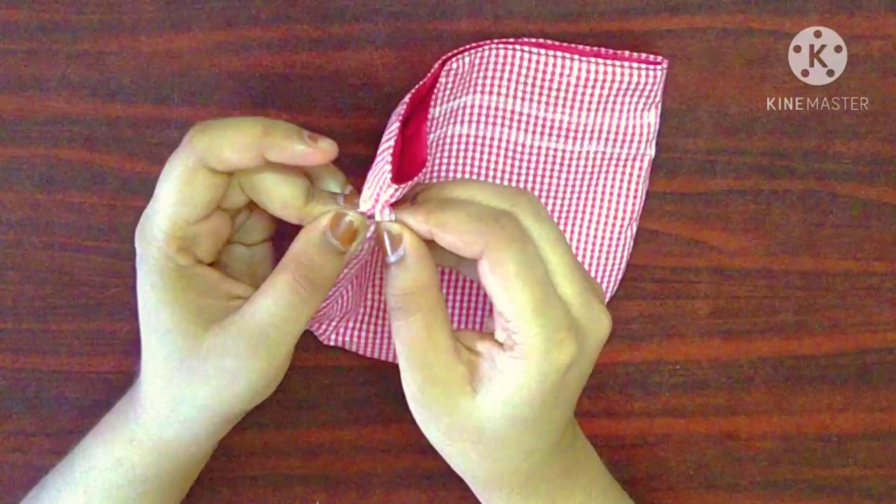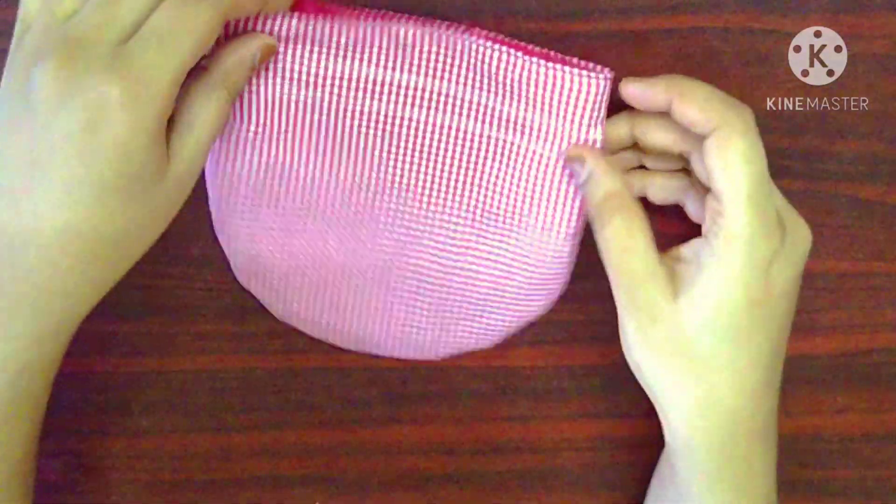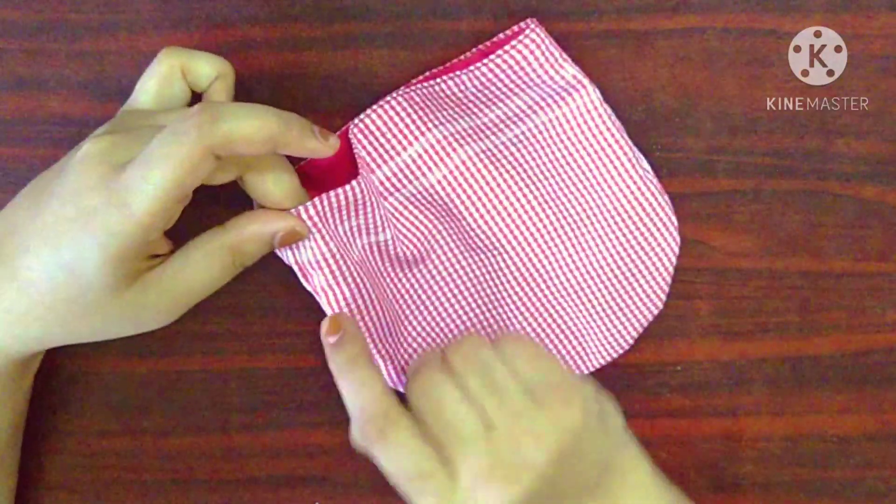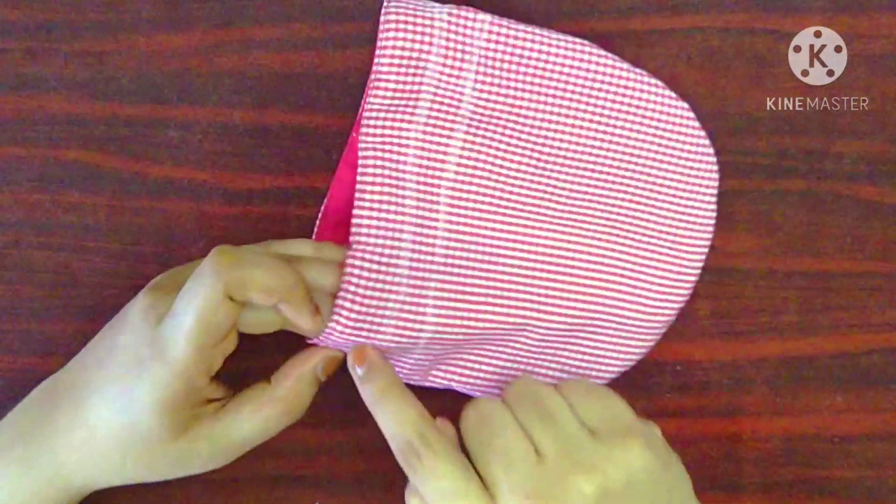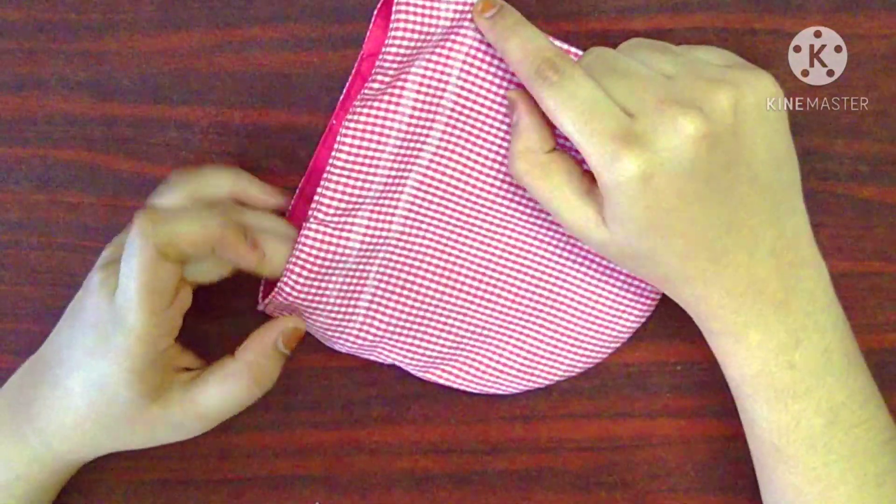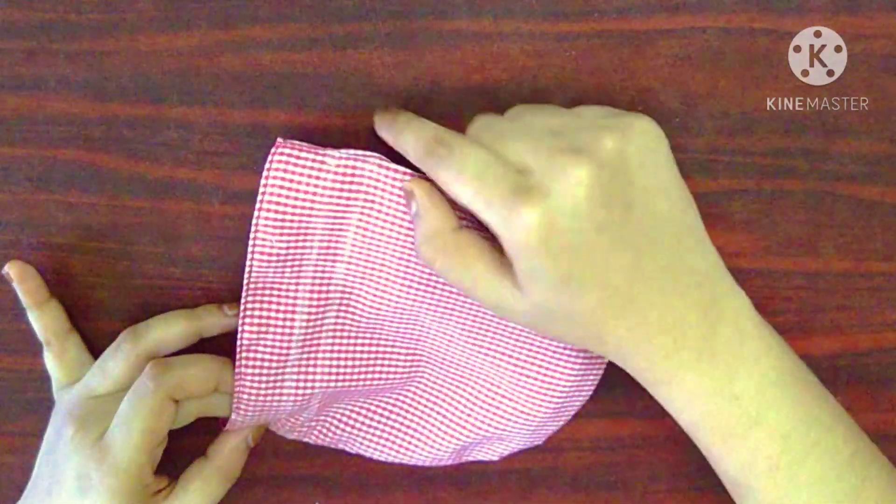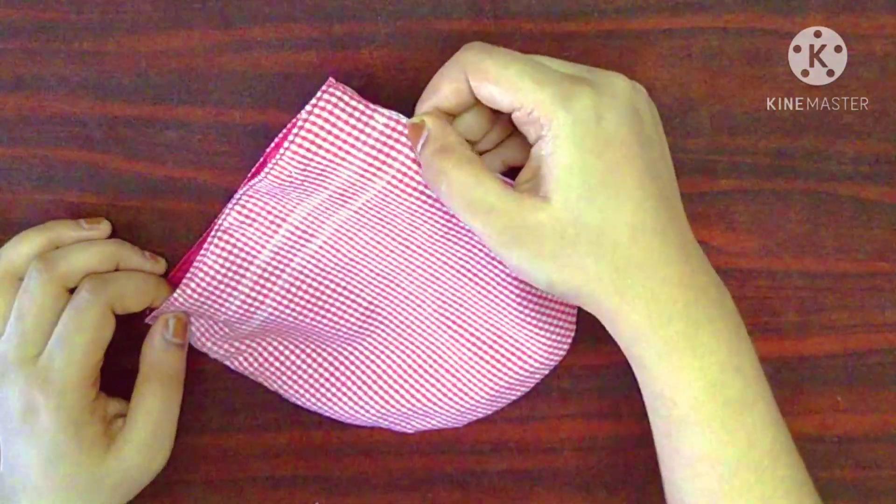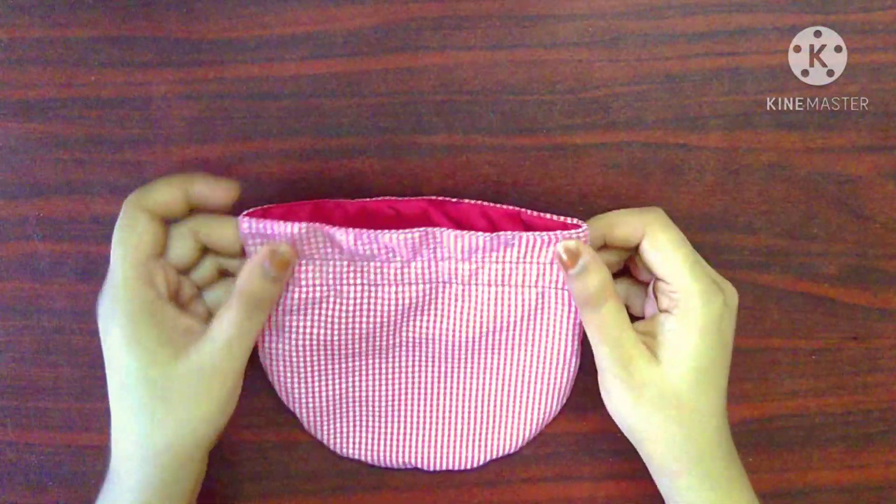These are the half inch spaces that I have made earlier. Now, I am going to start stitching from this point and I will stitch along this line until I reach the same point. Similarly, I will stitch half inch below. It will look something like this.